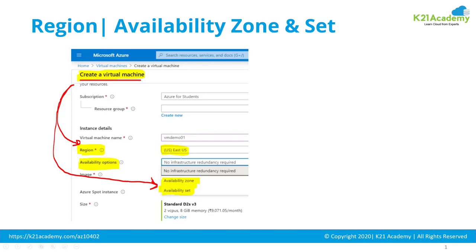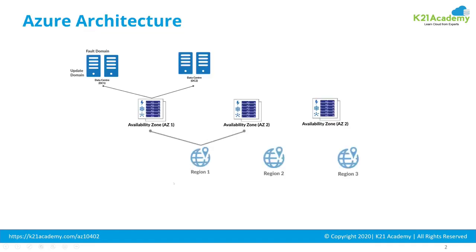In this case, US East has multiple availability zones, and that's why I'm getting the option of availability zones. So multiple availability zones make a region. Multiple regions make a geography — for example, within India there are multiple regions such as South India and West India. Similarly, the US has multiple regions and Europe has multiple regions.